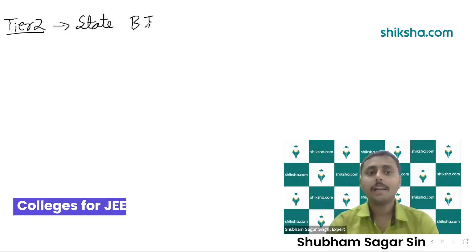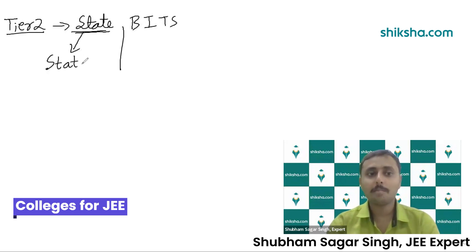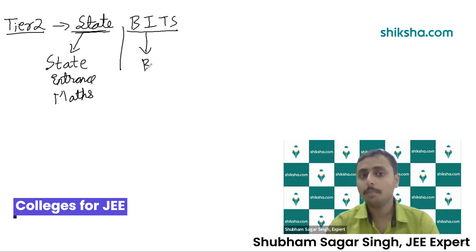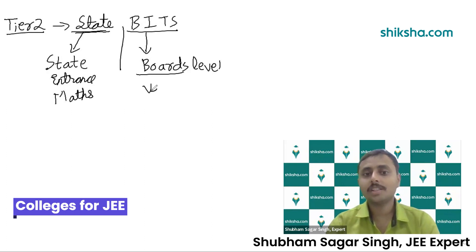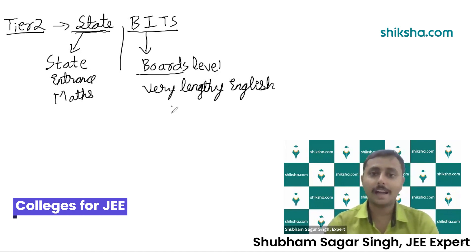Tier two colleges are generally through a state entrance examination which is separate, and these are maths-heavy but easier papers. BITS is an entirely boards-level paper — it will be completely boards level but it's very lengthy. You also need to be extremely proficient at English and aptitude, as BITS does not just ask physics, chemistry, and math; it also asks English and aptitude.